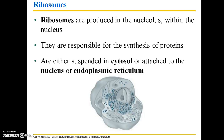Ribosomes are very important organelles. They are produced in the nucleolus, which is within the nucleus, and they are responsible for the synthesis of proteins. The huge variety of proteins that our cells need to manufacture are all made in ribosomes. There are two main types: those that are suspended in the cytosol, and those that are attached to the nucleus or the endoplasmic reticulum.